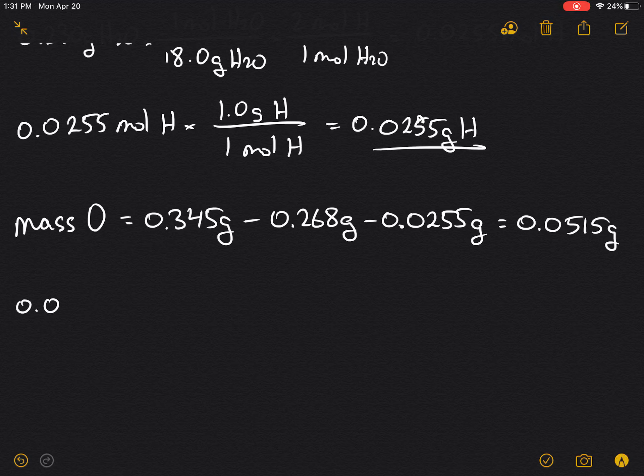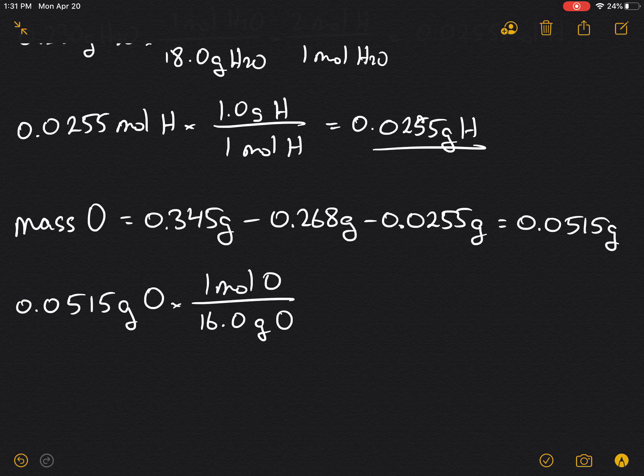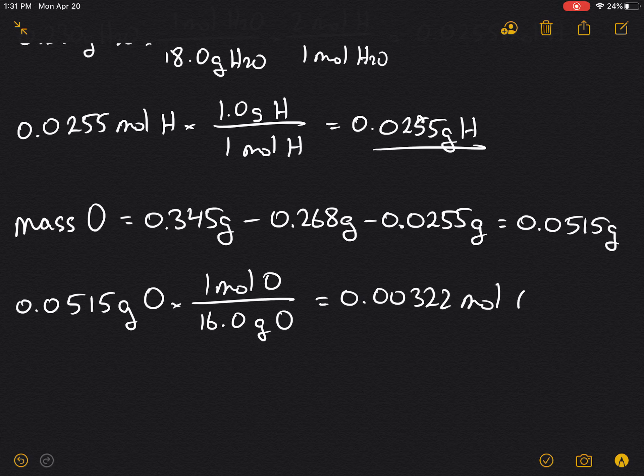Let's find the moles of oxygen. 0.0515 grams oxygen times 16.0 grams per mole, and that will yield 0.00322 moles of oxygen.